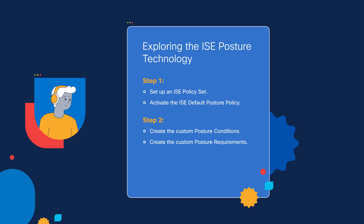In step two, we can tell the ISE box using conditions that we want to make sure a person has a specific antivirus software, that it's running a specific version, and that the software database it uses to look for viruses or malware is up to date. Once we set up the conditions, we can then put them into requirements — basically a list of conditions we look for to know whether or not the person is meeting the policy.